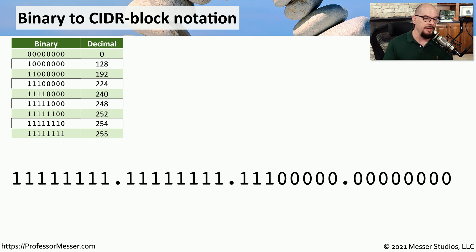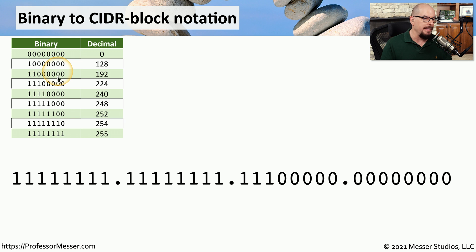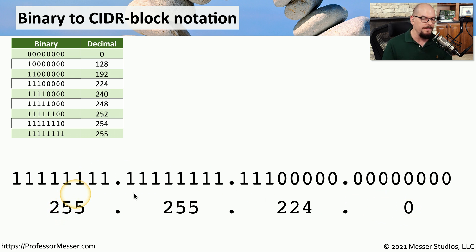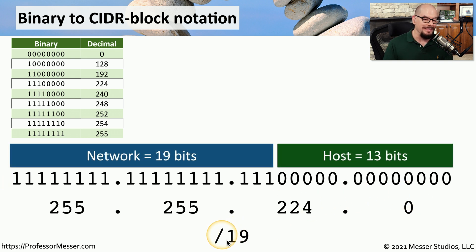Let's do another subnet mask calculation. In this case, we have all 1s in the first two octets. In the third octet, we have three 1s and five 0s, and the last octet is all 0s. From our binary-to-decimal conversion chart, the first two octets are 255. The third octet — three 1s and five 0s — is 224. All 0s is obviously 0, which means this subnet mask is 255.255.224.0. Counting the number of 1s, this is a slash 19 subnet mask, with 19 bits for the network and 13 bits left for the host.